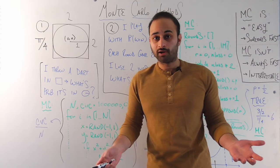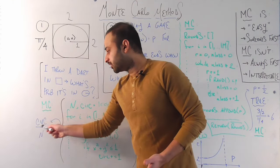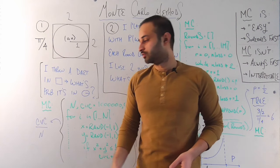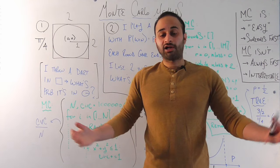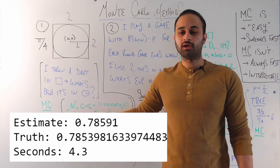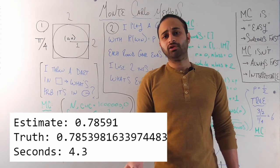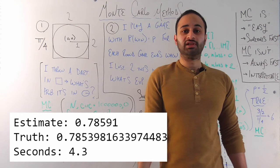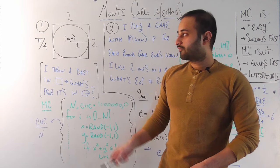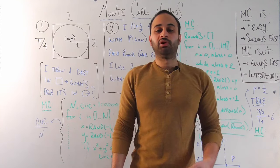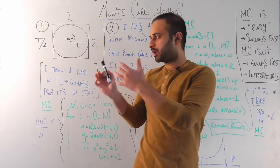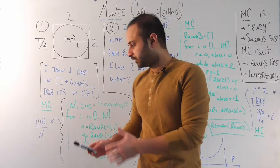If x squared plus y squared is less than or equal to 1, the dart is in the circle, so circ plus equals 1. Circ is the running total of darts that land inside the circle. At the end, circ divided by N gives the fraction — which is exactly the probability. I actually coded this myself, and the estimate from the simulation is extremely close to the true value. It doesn't take too long to compute even for one million samples, so this is a good way to solve the problem if we truly had no other way.